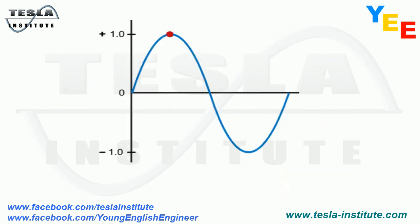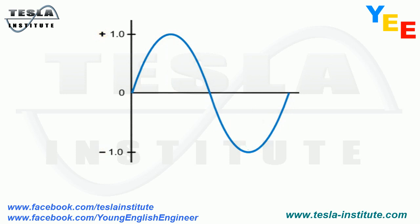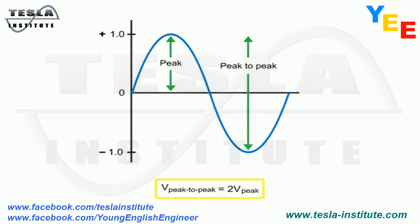The highest point or the lowest point of an AC waveform are referred to as peaks. Peak amplitudes or values can be measured in the positive direction, starting from the baseline, or in the negative direction. The peak-to-peak value is measured from the negative aspect of the waveform to the positive aspect. In symmetrical waveforms, the peak-to-peak value is twice the peak value.